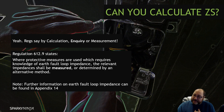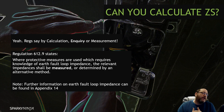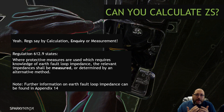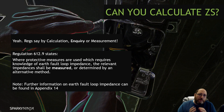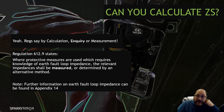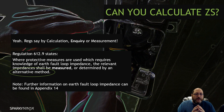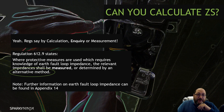It doesn't say 'or calculated' — it says an alternative method. What other methods there are than calculation, I don't know — maybe witchcraft or something. But it says you can measure it, or have it determined by an alternative. It then says you can get further information in Appendix 14.